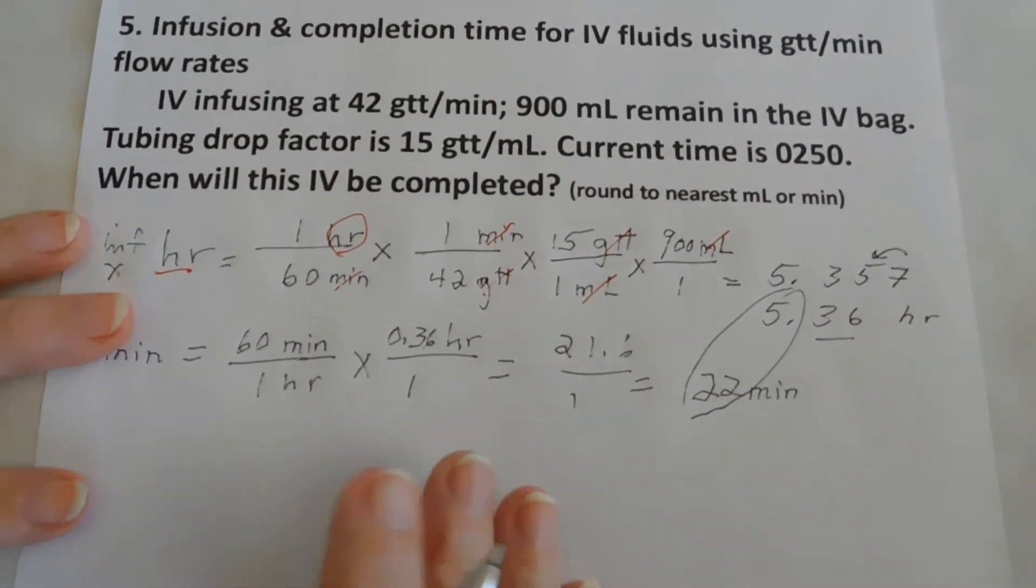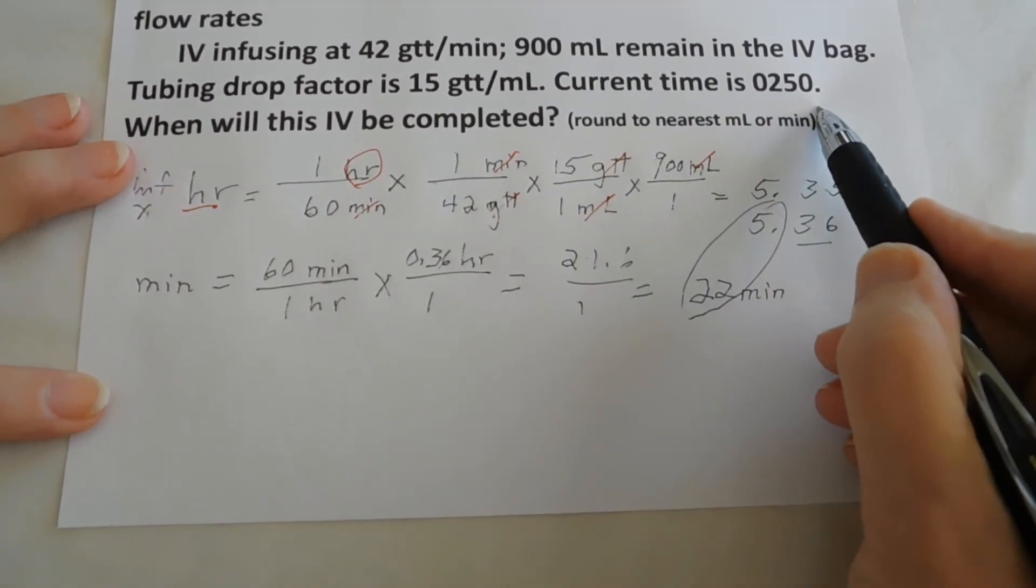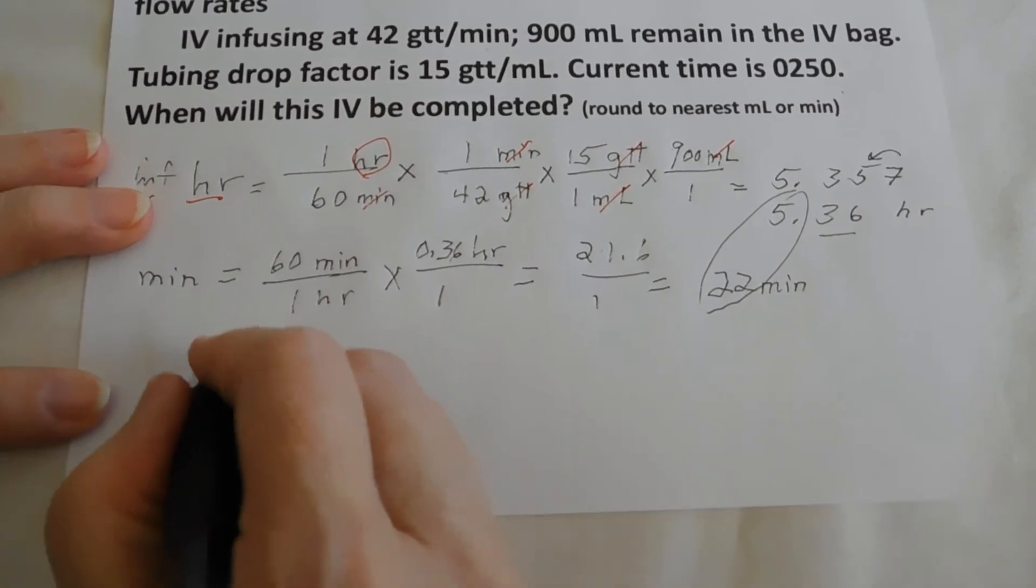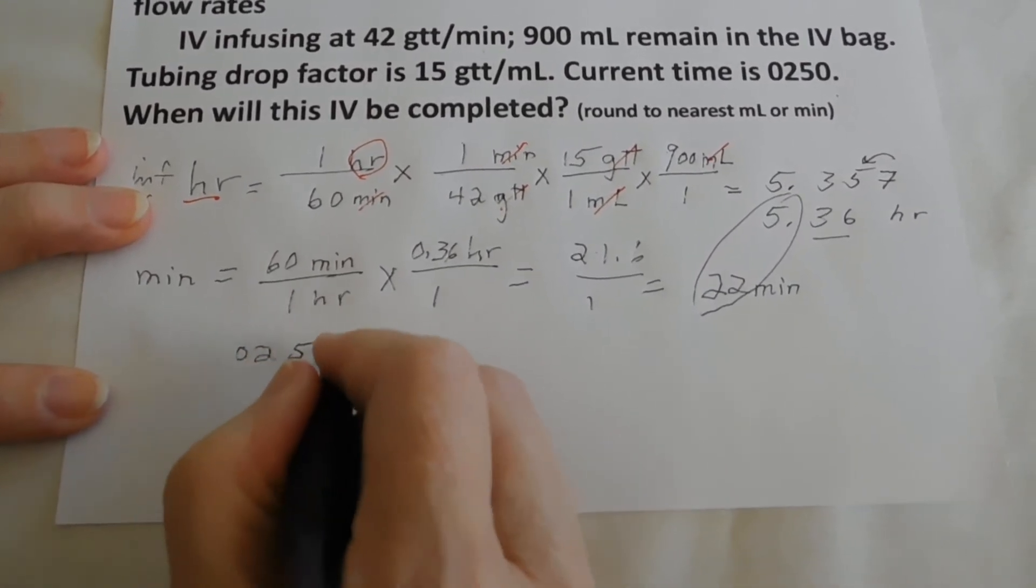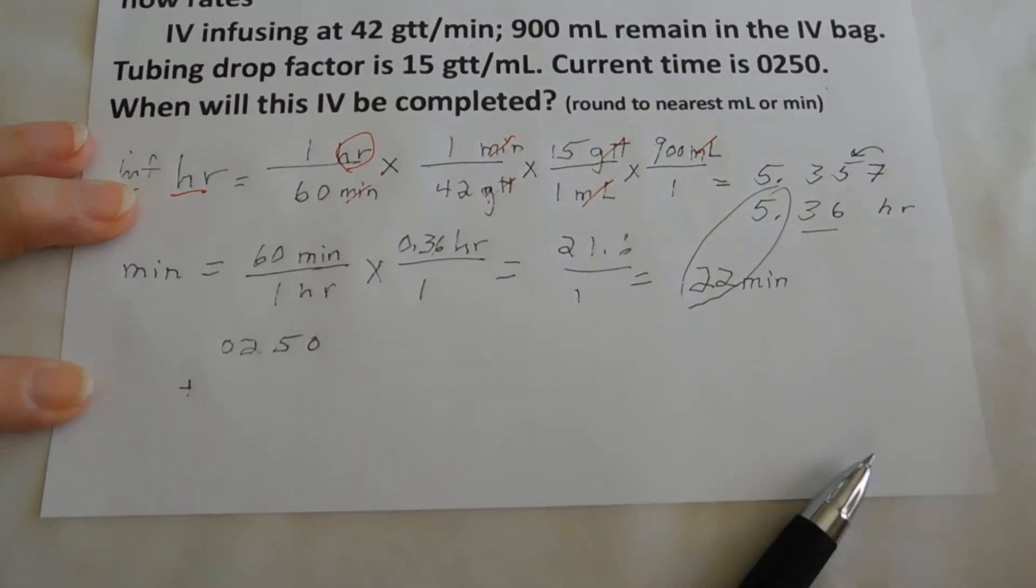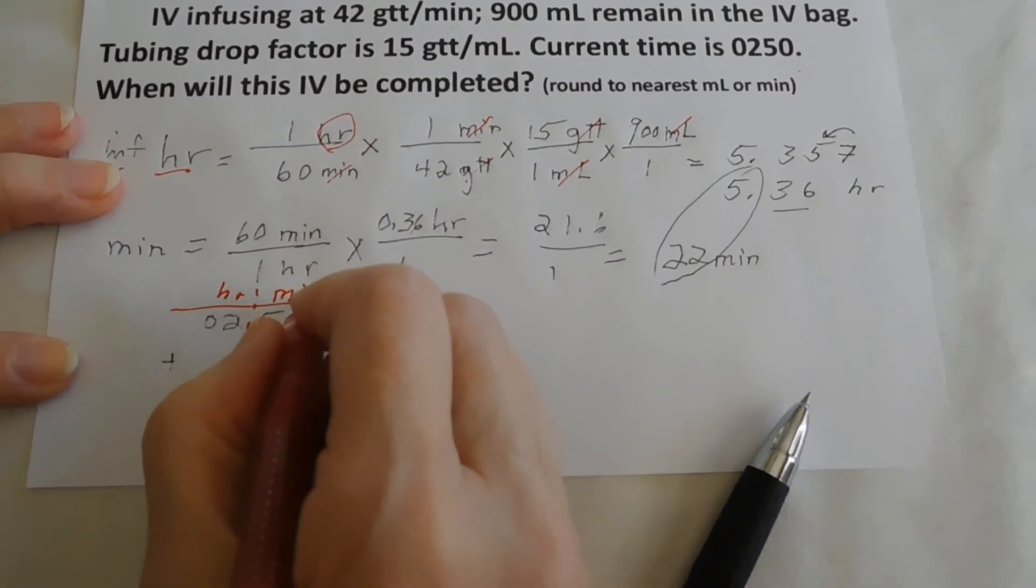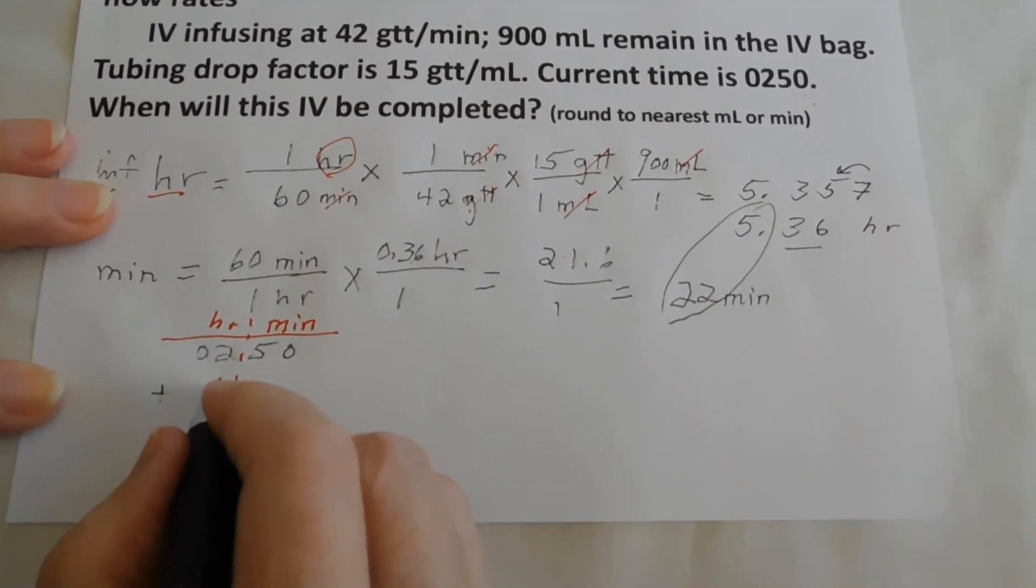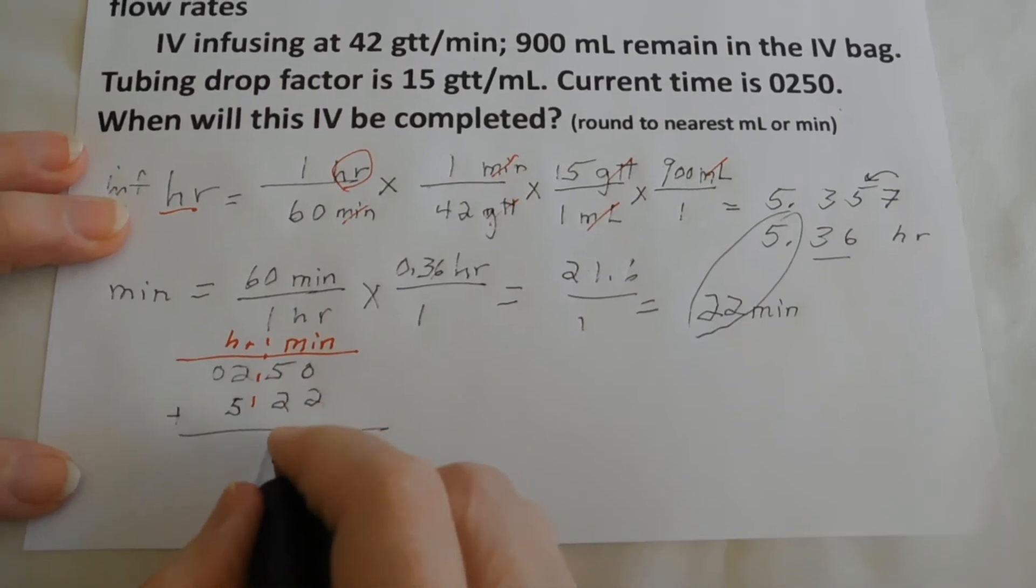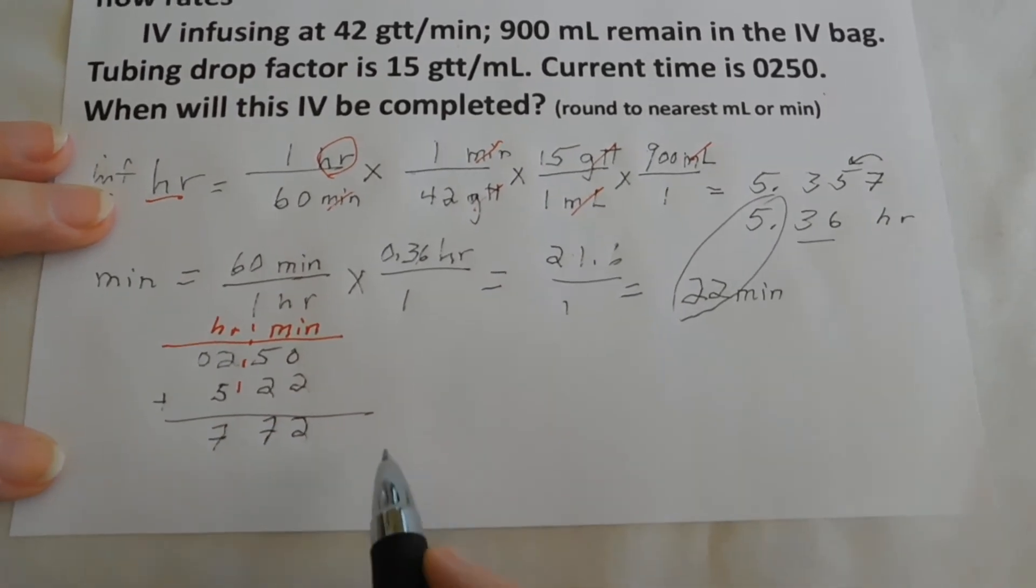Now we need to calculate when this will end. When is our completion time? It's 0.250. So we know that current time plus infusion time is completion time. Our current time is 0.250. We're going to put 0.250 here. And add that to our infusion time. And I like to separate hours, minutes. So we're going to put our 5 hours and 22 minutes here. Let's add the minutes together. We get 72. And add the hours. We get 7. Now, 772 doesn't exist.